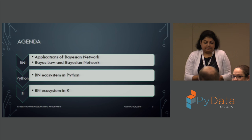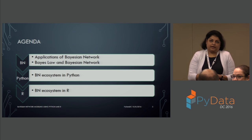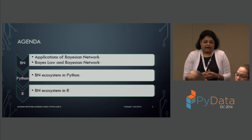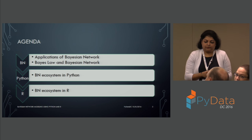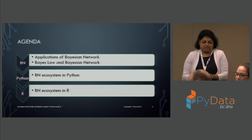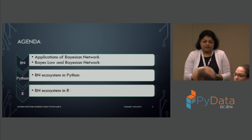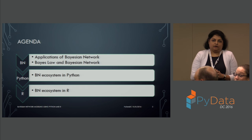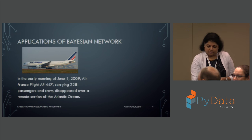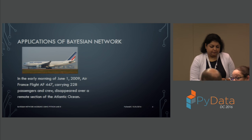Let's look at the agenda. The agenda involves looking at the applications of Bayesian network and how it was derived from Bayes' law and the theories of Bayesian network. We'll follow that with an understanding of the BN ecosystem in both Python and R. So let's first take a look at the applications of Bayesian network.